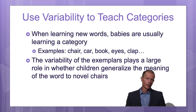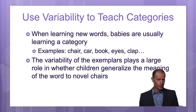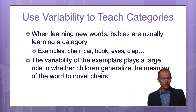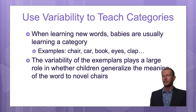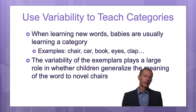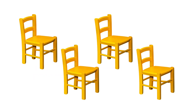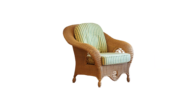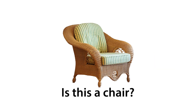Another principle for learning words is to intentionally use variability when you're teaching categories of words. So for instance, if I wanted to teach the word 'chair,' it would be better if all the chairs are not the same. If all of the chairs look the same, then if the child sees a new chair, the child may not know if it's a chair or not.